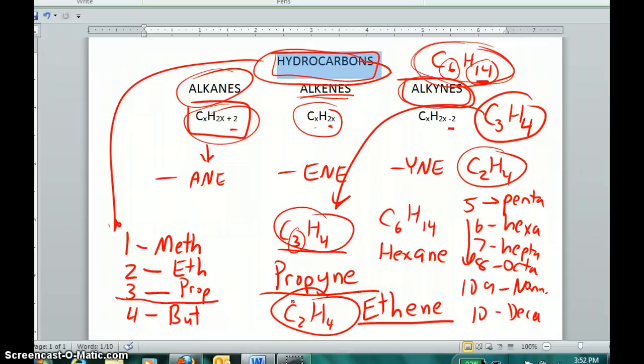The root of the name is based upon how many carbons: meth, eth, prop, but, penta, hex, hept, oct, non, dec. And then the end of the name, the suffix, is a function of the ratio of carbon to hydrogen. If it's 2 to 1, it's an 'ene'. If it's 1 to 2 plus 2, it's an 'ane'. If it's 1 to 2 minus 2, then it is a 'yne'. Simple enough.